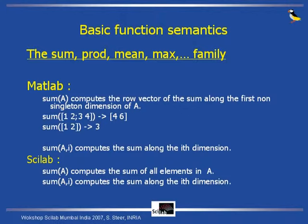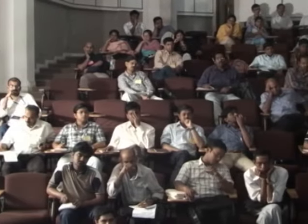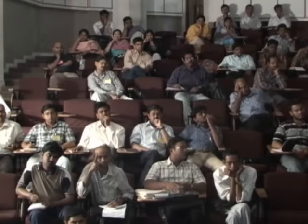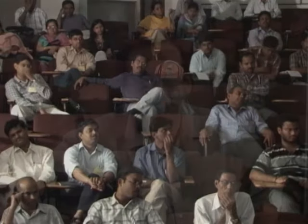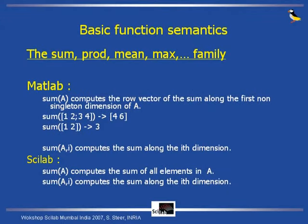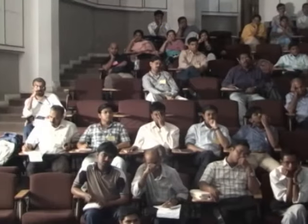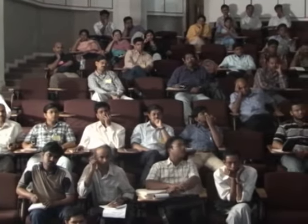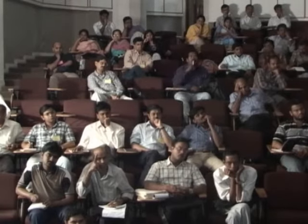In Scilab, we thought this solution is not very good because a matrix during an algorithm may become a vector, so the semantics of the function would change during the algorithm. So we decided that sum(A) will always compute the sum of all elements in A. And to use the dimension-based semantics, you use sum(A, i), which computes the sum along the i-th dimension. This syntax is available in both MATLAB and Scilab, giving it a constant semantic for every shape of matrix.